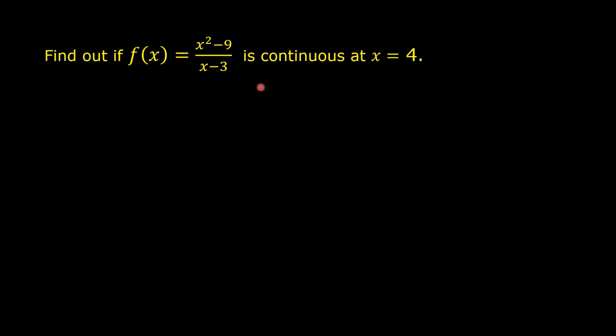Let us find out if f(x) = (x² - 9) / (x - 3) is continuous at x = 4. We just found out that it is discontinuous at x = 3.